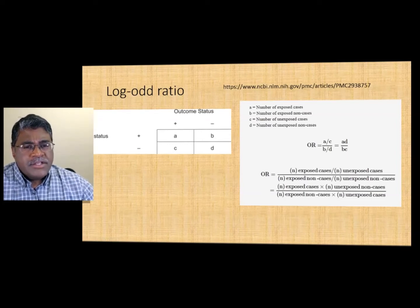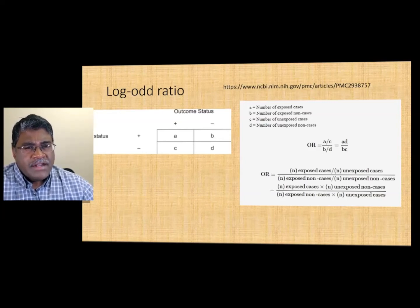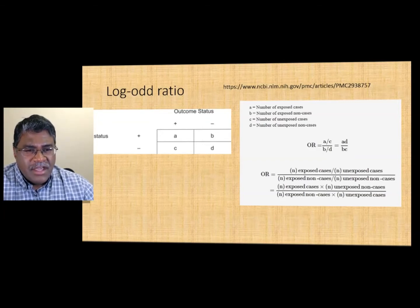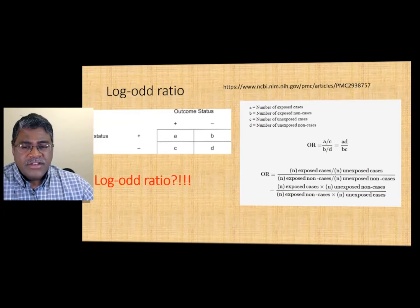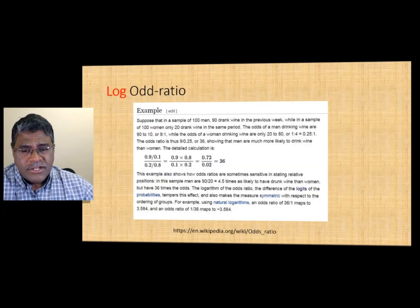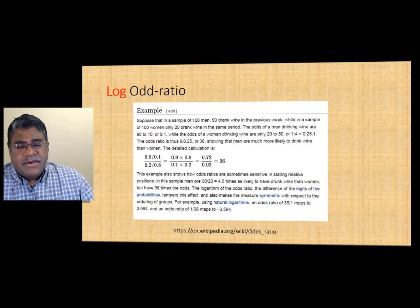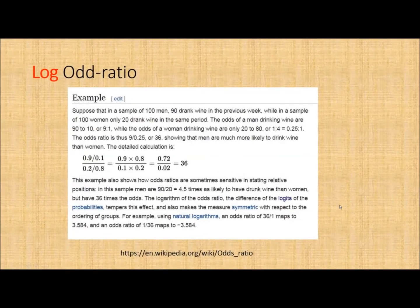Sometimes, based on sample or population sizes, odds ratios can be unwieldy numbers. That's where the log-odds ratio comes in — you take the logarithm of the odds ratio. Here is an example: in a sample of 100 men, 90 drank wine the previous week; in a sample of the same number of women, only 20 drank wine in the same period.